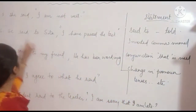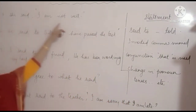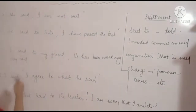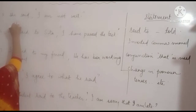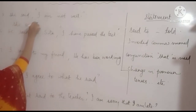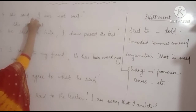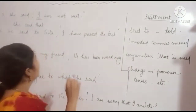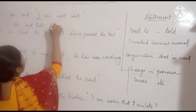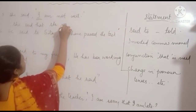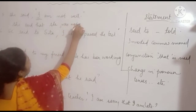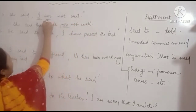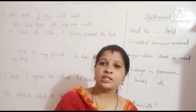Example 5: 'She said, I'm not well.' We write: She said that. 'I' changes to 'she' according to the subject. 'Am' is present tense and changes to 'was'. Answer: She said that she was not well.